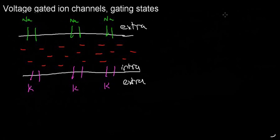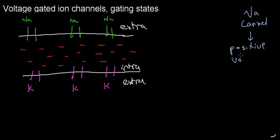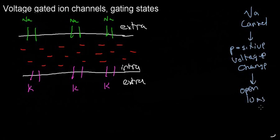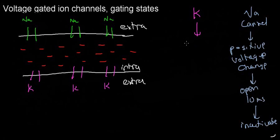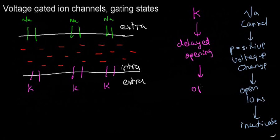What if a sodium channel senses some sort of positive charge — a voltage change — and it opens? It opens for a while, let's say 10 milliseconds, and then it inactivates, stopping sodium from coming in. For potassium, it does the same thing: if it senses this change, it will open, but with a delayed opening — it takes a while. Let's say potassium channels are open for about 30 milliseconds, and then they just close.